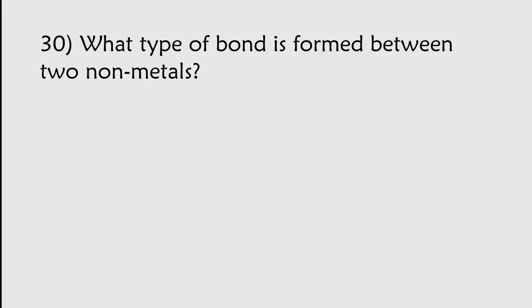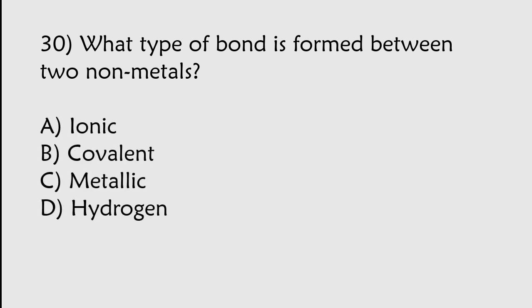Which type of bond is formed between two non-metals? Ionic, Covalent, Metallic, Hydrogen. The correct answer is option B. Covalent.